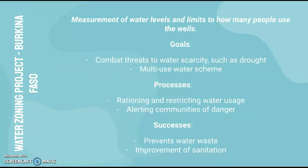Finally, we have the water zoning project in Burkina Faso, which involves measuring water levels and setting limits on how many people use the wells. The goals are to combat threats to water scarcity such as drought, and it creates a multi-use water scheme for household, industry, and agriculture. Processes include rationing, restricting water usage, and alerting communities when they go over the limit. Successes include preventing water waste and significantly improving sanitation.